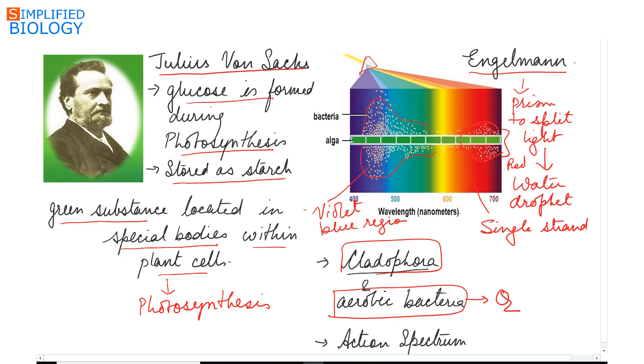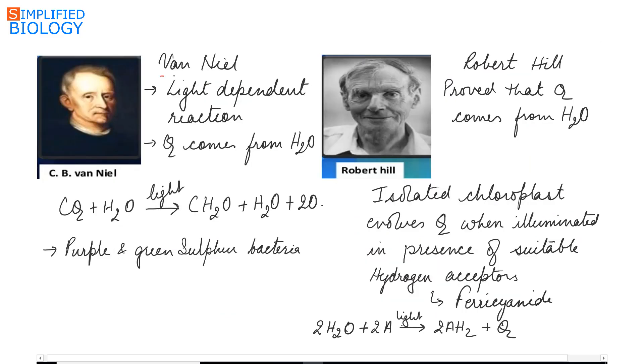Engelmann gave the action spectrum which tells us the rate of photosynthesis at each wavelength. Van Niel worked on purple and green sulfur bacteria and showed that photosynthesis is a light dependent reaction and the oxygen released during photosynthesis comes from water. The equation he gave was carbon dioxide and water in the presence of light forms CH2O, water and oxygen.